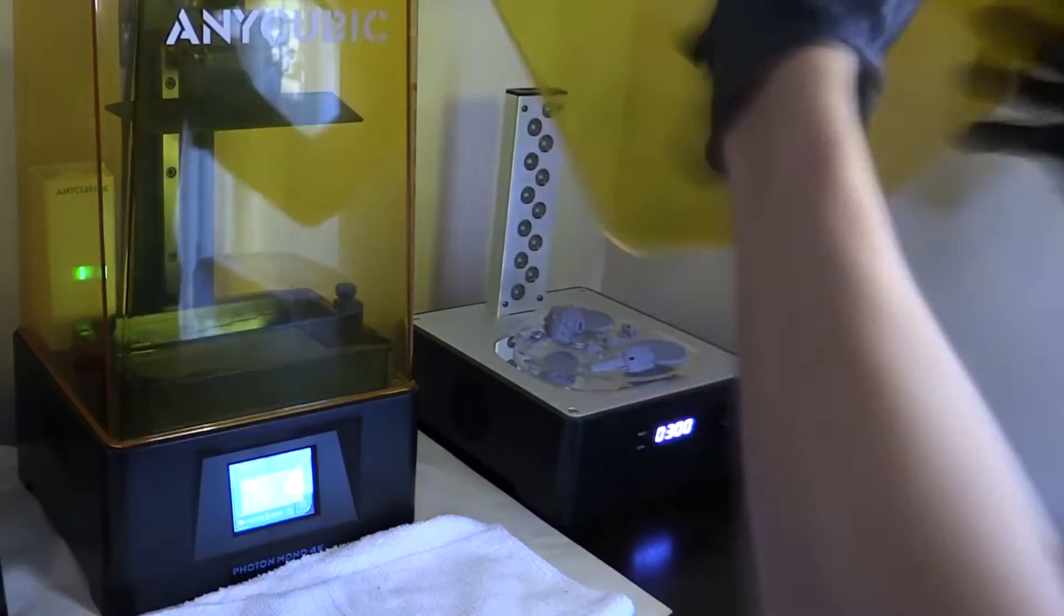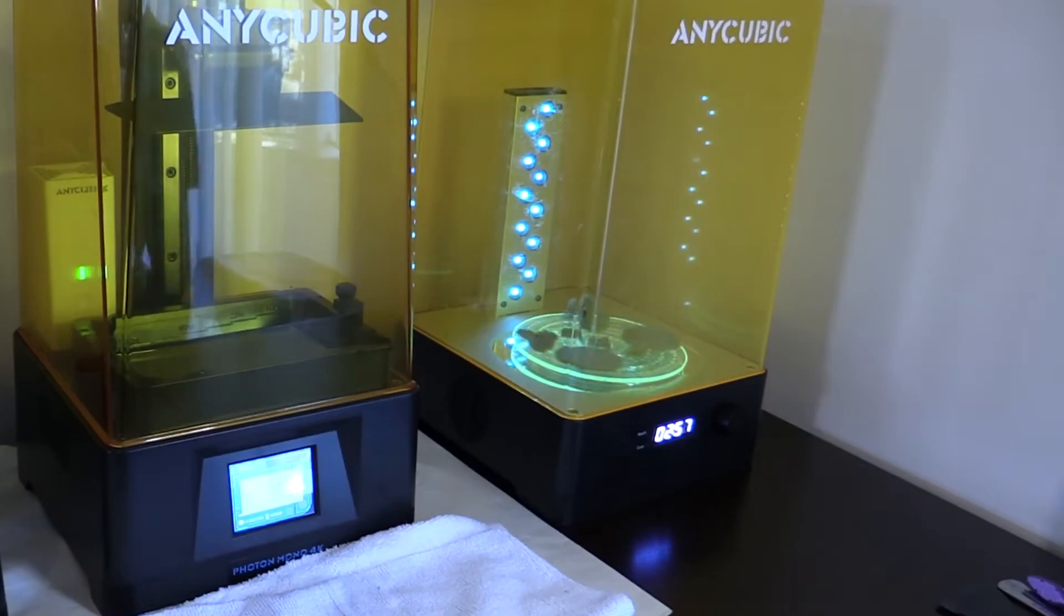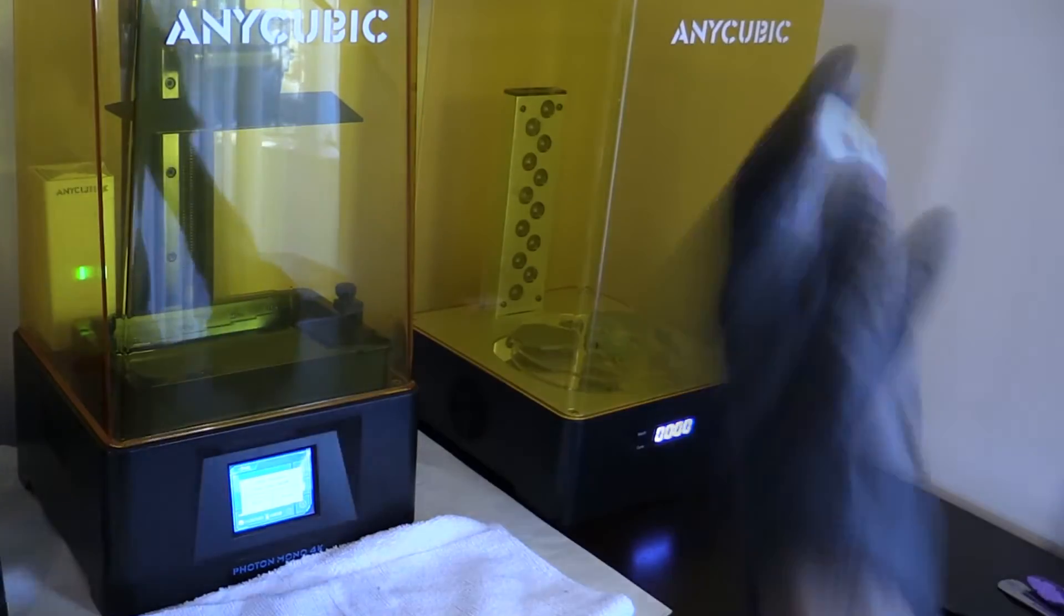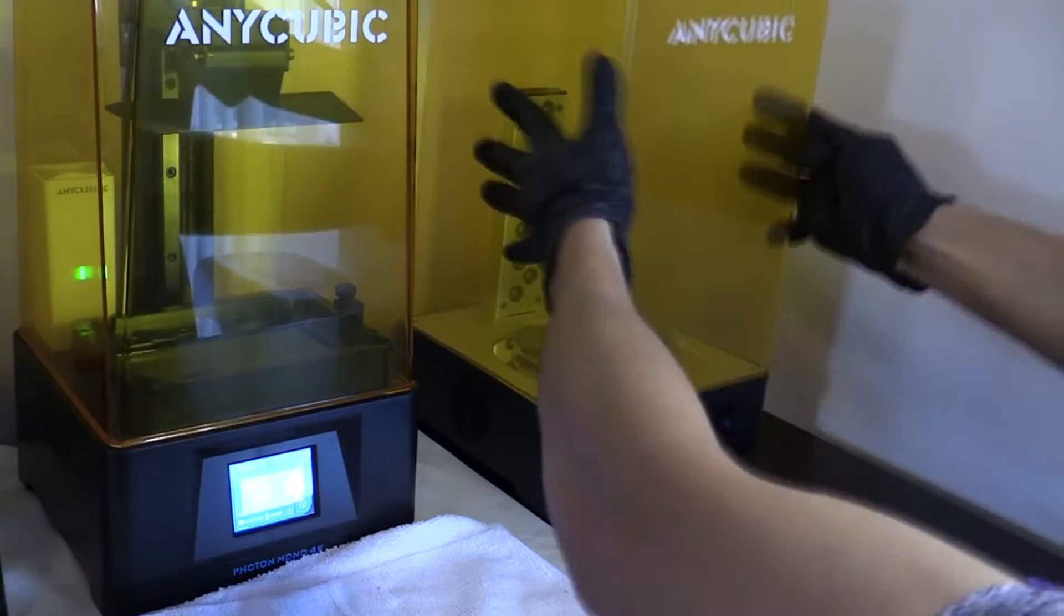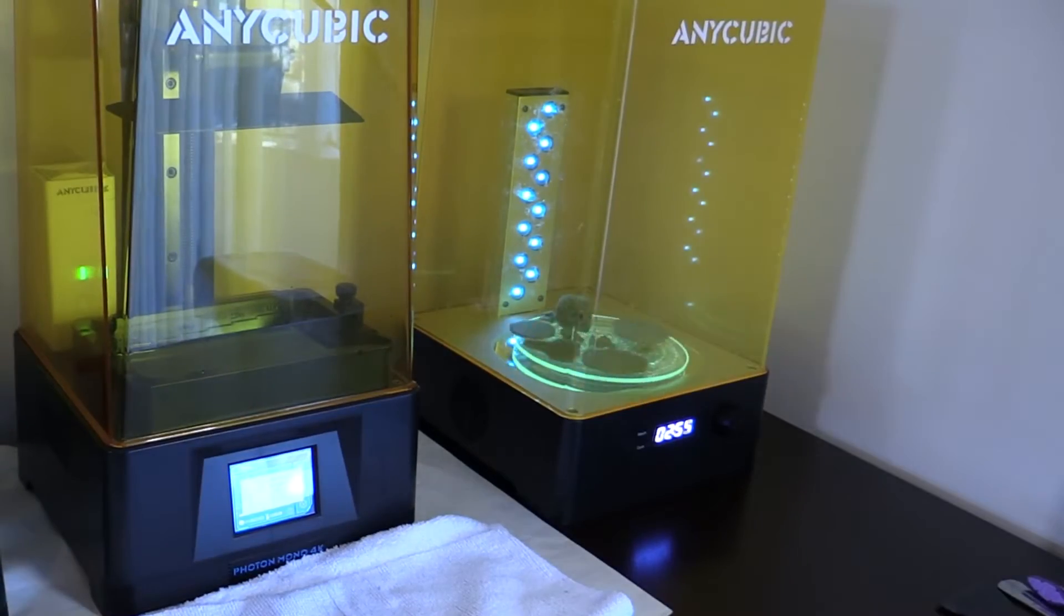You, of course, also want to be careful around the UV light emitted by your printer and curing machine. They come with enclosures for a reason, so make sure to use them. UV light is considered a form of radiation.